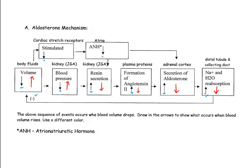A secondary effect is that increased body fluid volume causes increased stimulation of cardiac stretch receptors, and this causes more atrio-natriuretic hormone to be secreted, which also causes less secretion of aldosterone, reinforcing the previous mechanism. In this way, body fluid levels can be regulated to appropriate levels regardless of whether we are over-hydrated or slightly dehydrated.